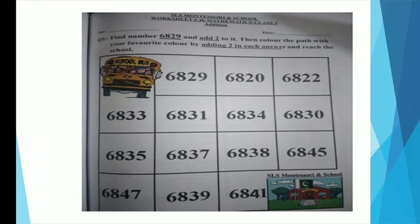Question: find number 6829 and add 2 to it, then color the path with your favorite color by adding two in each answer and reach the school. Oh wow, it's your school bus and it is going to your school!